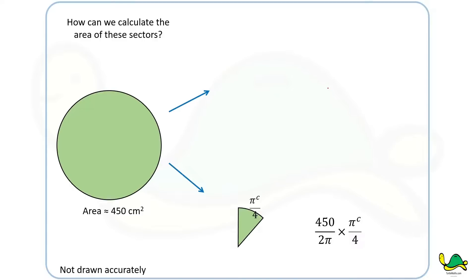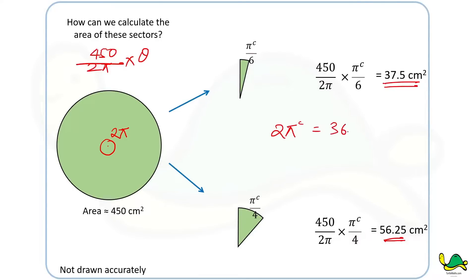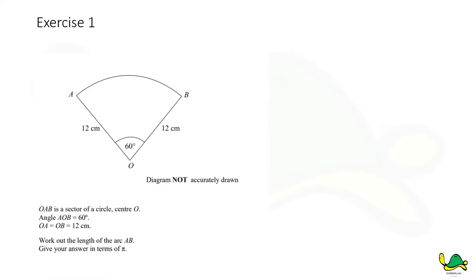Now let's work with radians. For π/6 radians, instead of 360 you use 2π as your central angle, so the formula becomes: (450 / 2π) × θ. That gives us 37.5 cm². The next one came out to be 56.25 cm². Remember that 2π radians = 360°. Once you understand this, you can derive these formulas rather than just memorizing them.